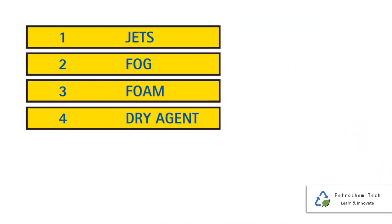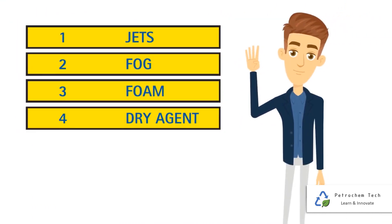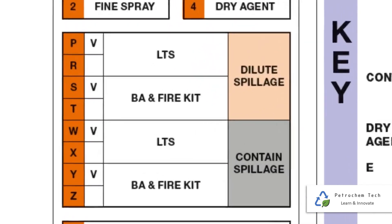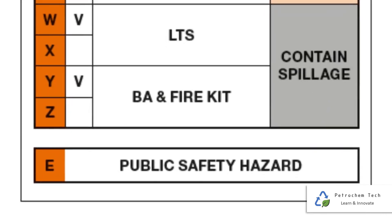The Hazchem Code consists of a number from 1 to 4, and any one of the letters P, R, S, T, W, X, Y, or Z, followed at times by the letter E.